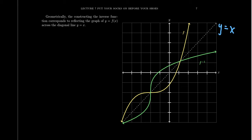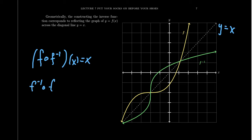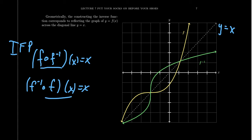This is the geometric interpretation of the inverse function property we saw before. We saw earlier that f composed with f inverse of x equals x, the identity function, and f inverse composed with f at x equals x as well. The inverse function property tells us this, and when you interpret it geometrically, you see exactly this picture — they're mirror images of each other.